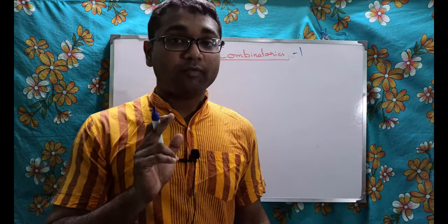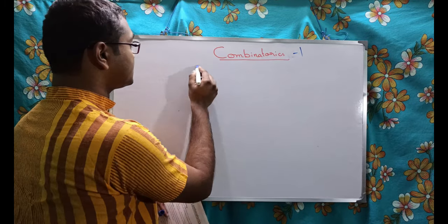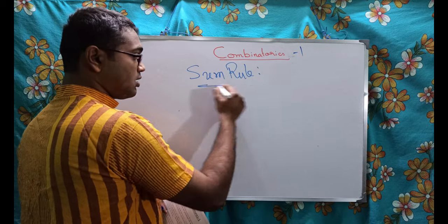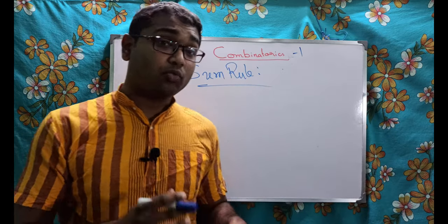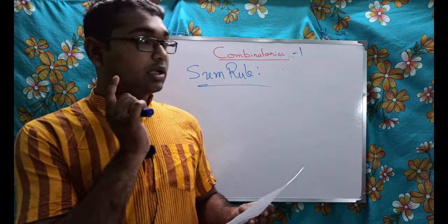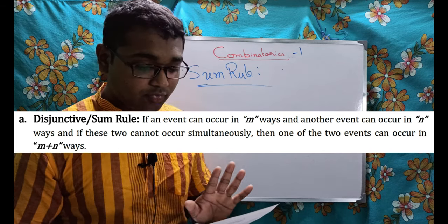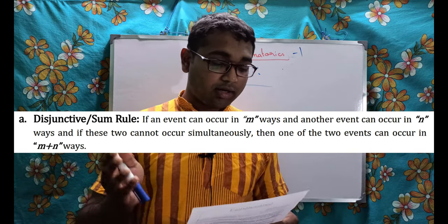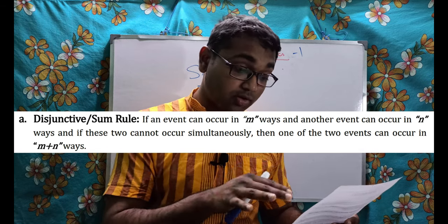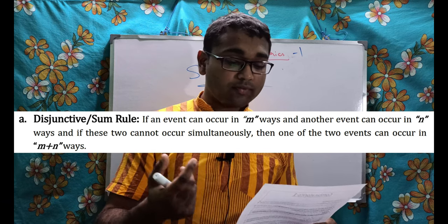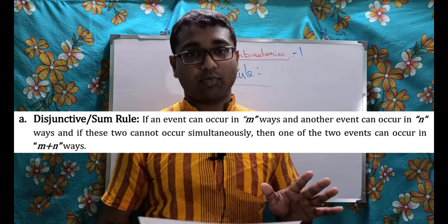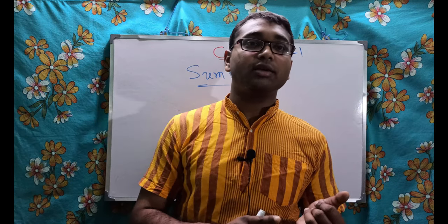The first principle of counting is the Sum Rule. The theorem states: if one event can occur in m ways and another event can occur in n ways, and these two events cannot occur simultaneously, then one of the two events can occur in m plus n ways.